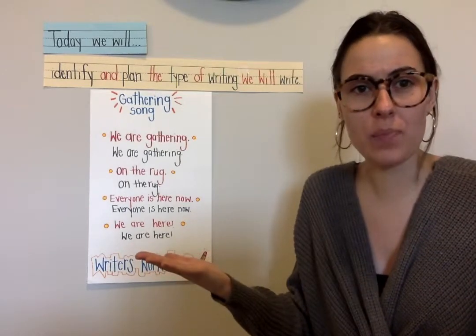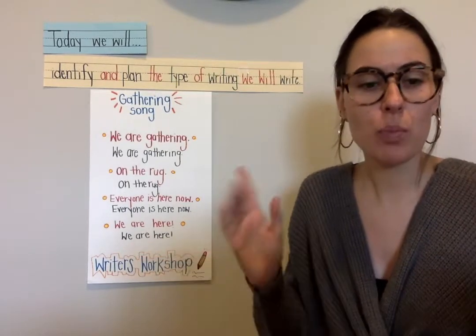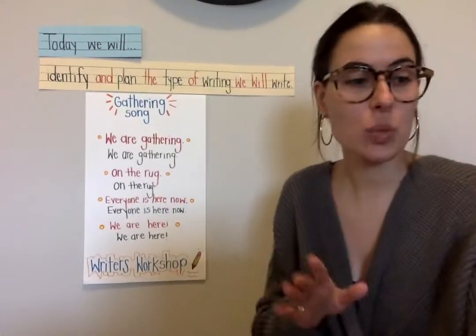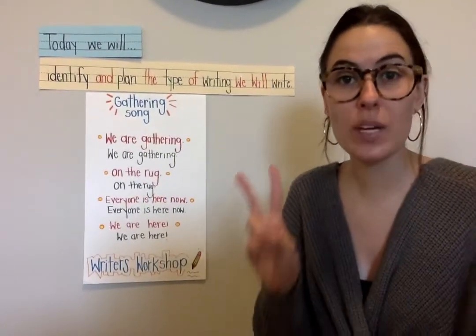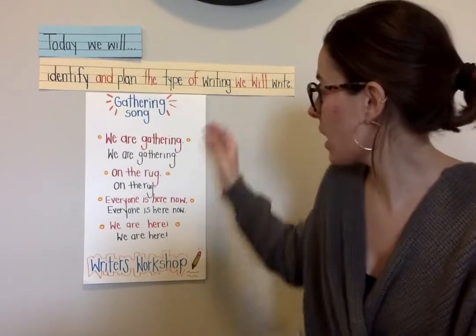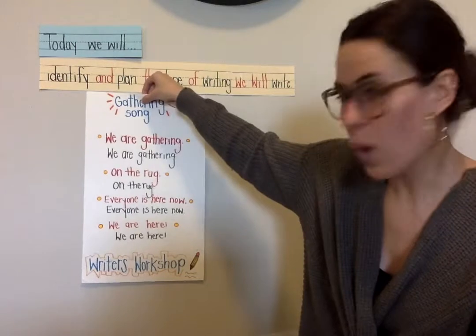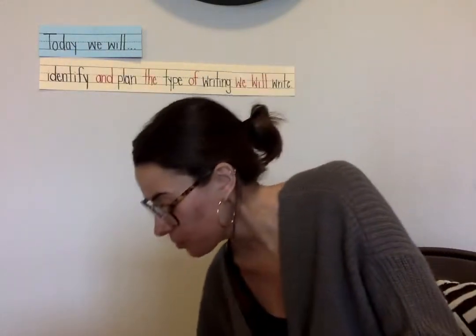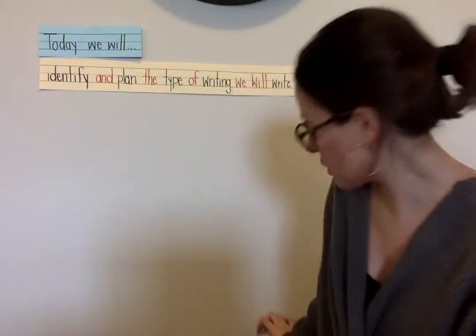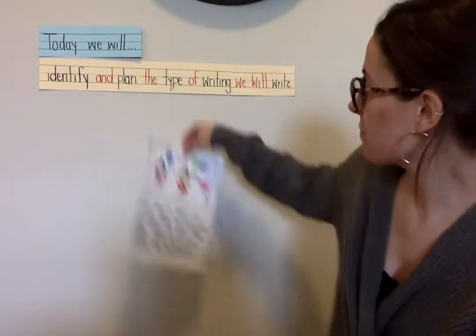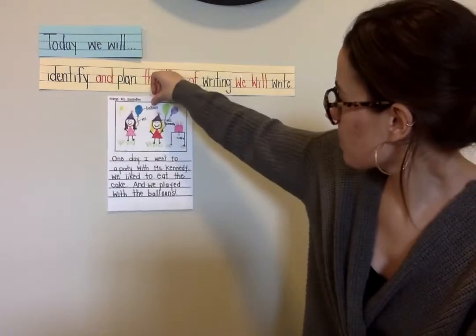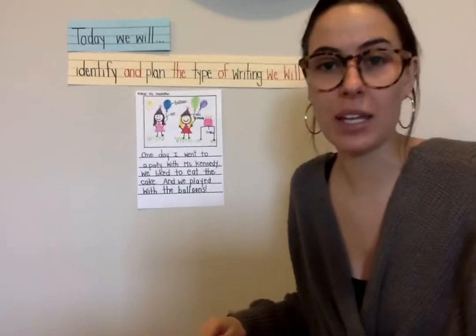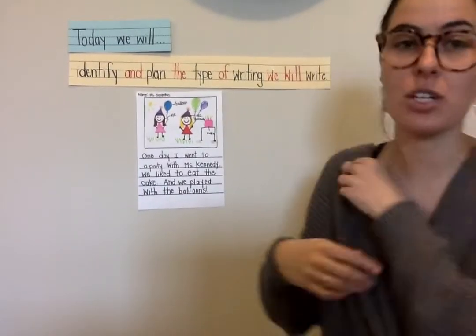So today I want to teach you that just like there are different kinds of books, different kinds of flowers, and different kinds of dogs, there are also different kinds of writing. Before a writer can even get started with their work and writing, they first think to themselves: what type of writing am I going to write today? What am I going to write about? So before we get started planning our writing, I just want to show you two examples of writing. Watch me as I put up our first example.